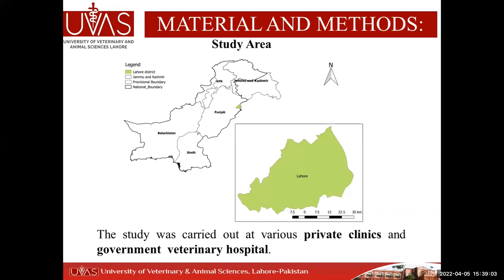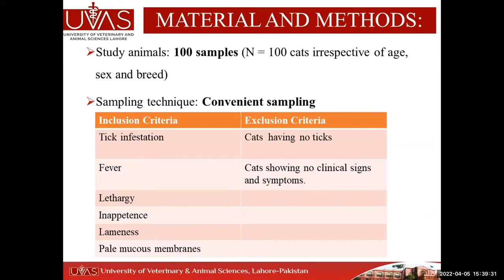The study area was Lahore, Pakistan — a developed city with private clinics where people commonly keep cats. We performed the study at different private and government veterinary hospitals. A total of 100 cat blood samples were taken, irrespective of age, sex, and breed, through convenient sampling. Cats showing clinical signs of tick infestation, fever, lethargy, inappetence, lameness, or failing peripheral veins were included; cats with no ticks or clinical signs were excluded.